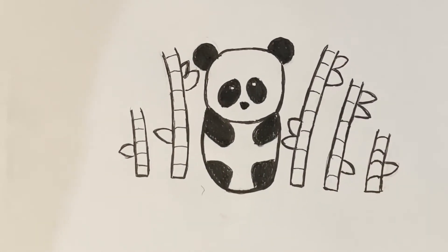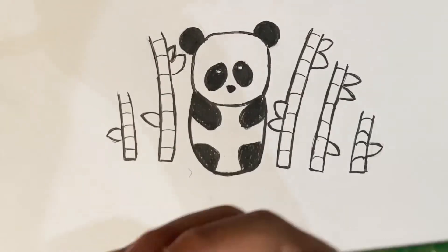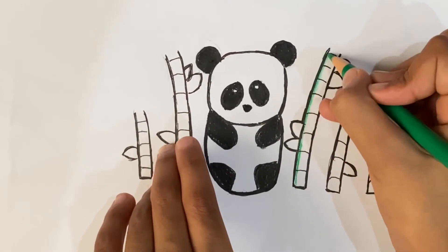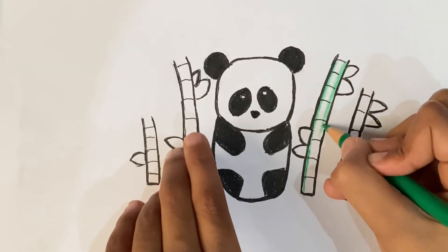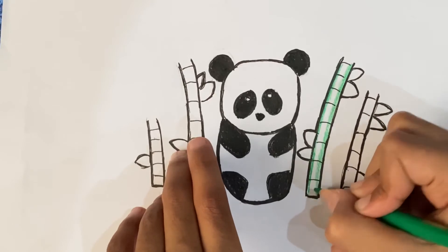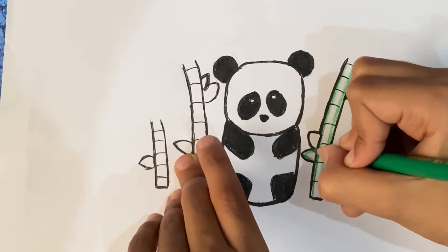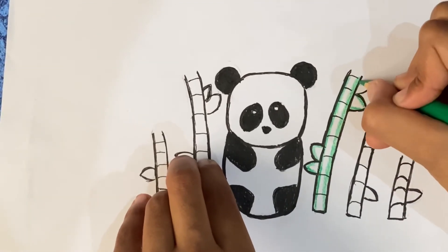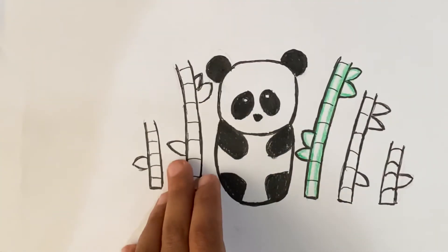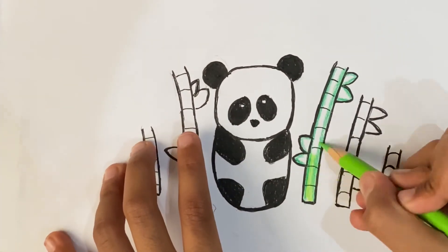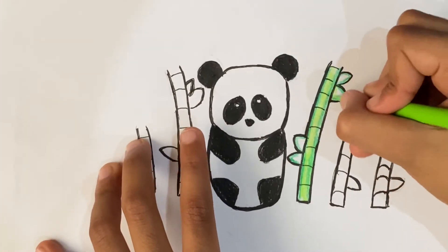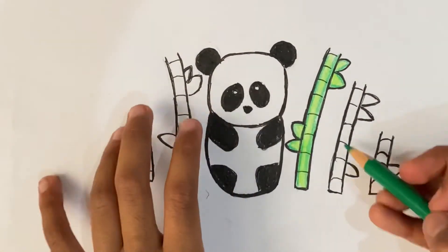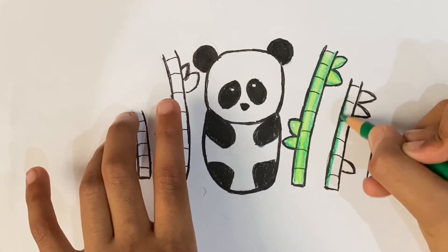Now let's color in the bamboos. First, take your emerald green and color in the edges of the bamboo. You can do this to the leaves as well. Let's do the same thing to all the bamboos.